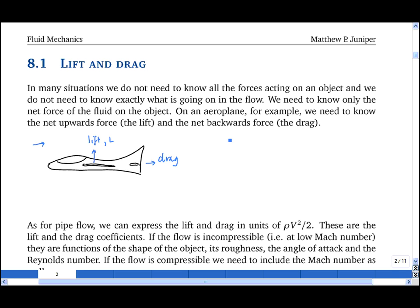And if I call the lift L, one tends to define non-dimensional coefficients. The relevant one here is the lift coefficient, CL, which is defined as the lift L divided by a half rho v squared, where v is the speed of the surrounding gas, times an area, which for example could be the surface area of the wings.